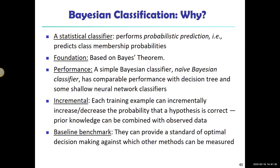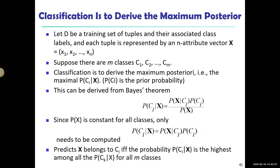A naive Bayesian classifier has long been used as a benchmark. It's very simple — the model does not need to be constructed; the data itself is the model. You can quickly classify new examples without constructing a model. Many earlier web search engines used naive Bayesian classifying tags, so it's a widely used classification algorithm, even though some of its assumptions are not met in practice.